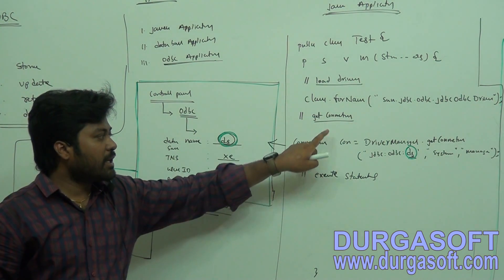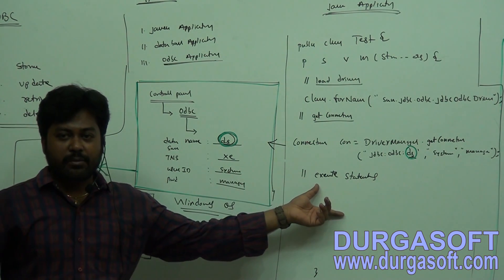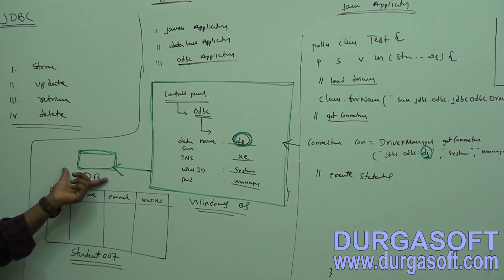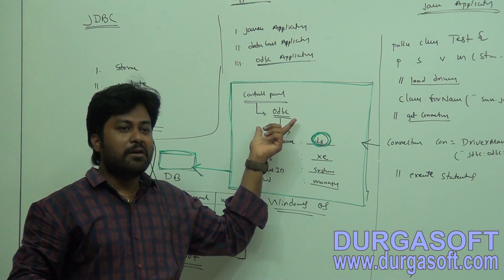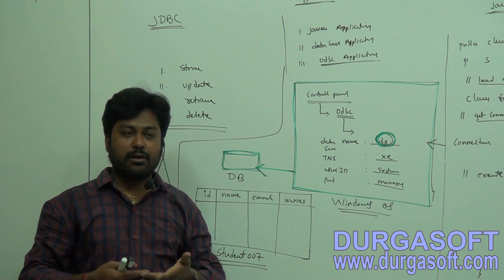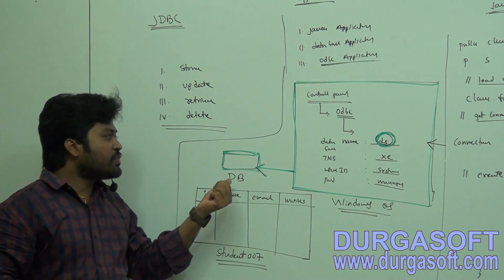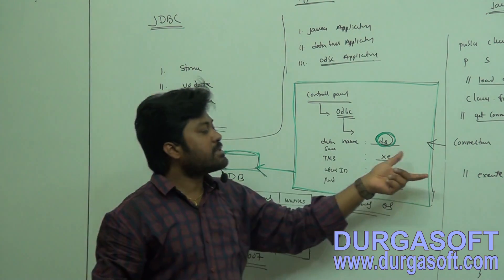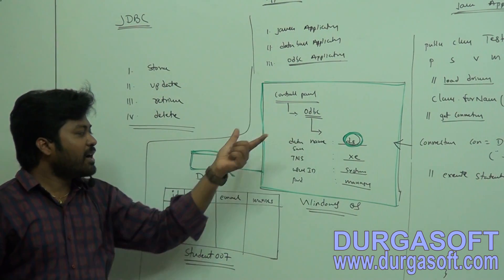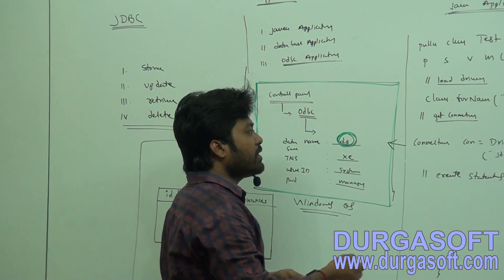First load the driver, then get the connection, and after that you can execute your statements. Any Java statement you pass will be converted by the API into Open Database Connectivity calls, which your database can understand. ODBC is not specific to Java — it handles .NET, PHP, C++, and any other calls, converting them all into ODBC calls that any ODBC-supporting database can understand.